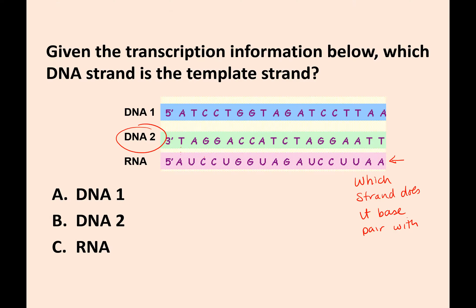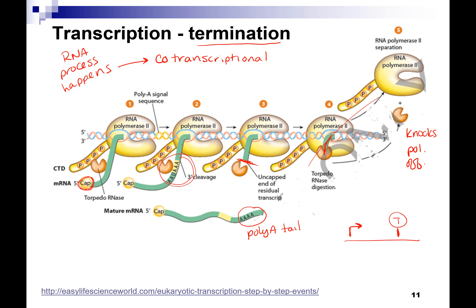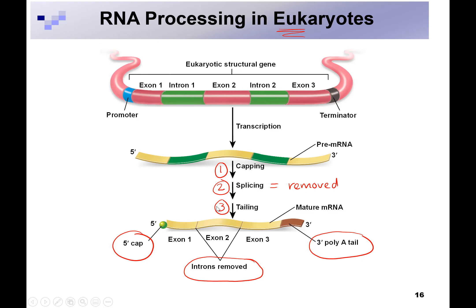All of this is happening co-transcriptionally: you get your cap, you get your tail, and you also get the introns spliced out. Introns are just genetic information that we don't need for the protein. Exons code for the protein — they're called exons because they exit out of the nucleus in that mRNA. The introns stay in, and when they're removed, hydrolysis reactions break them back to individual nucleotides that can be reused.